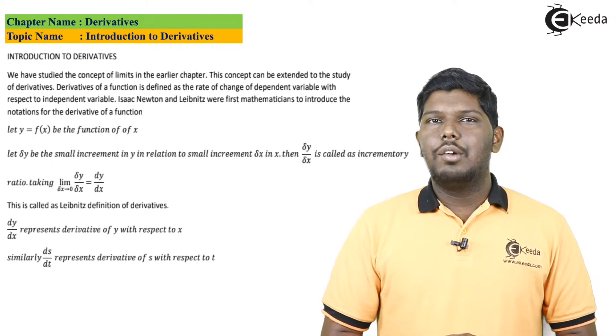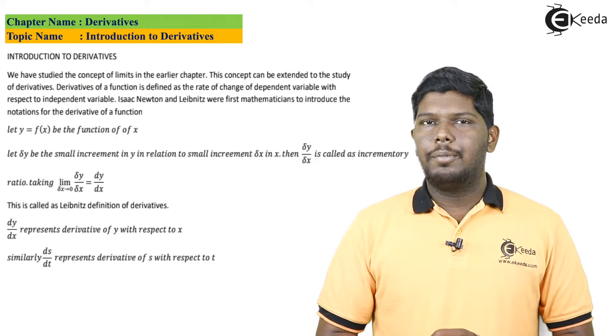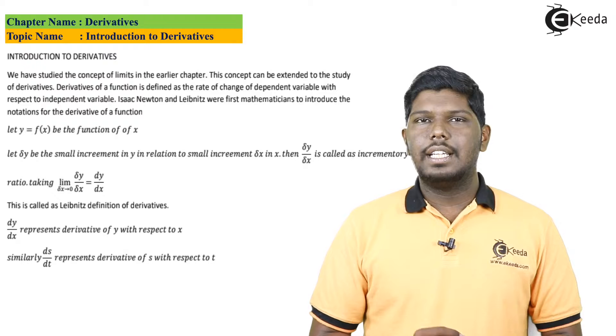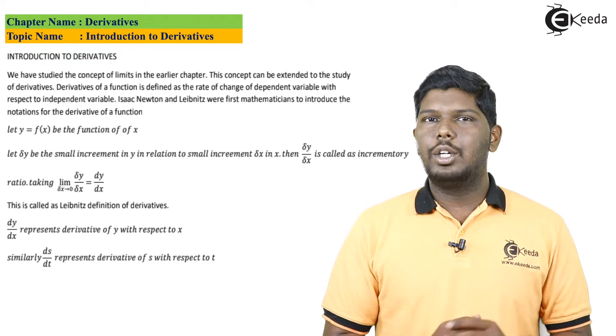If y equals f of x is a function, and del y is a small increment in y, and at the same time del x is also changed in terms of x. So y and x are the two variables.